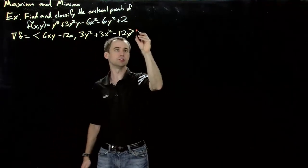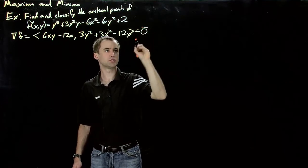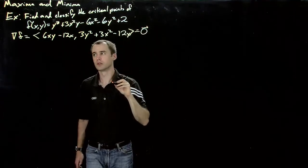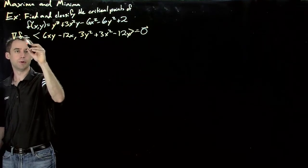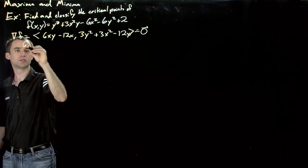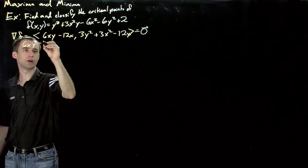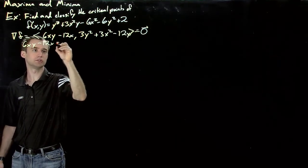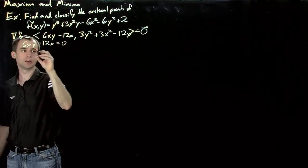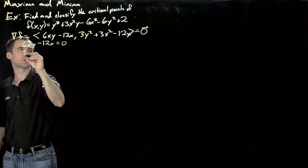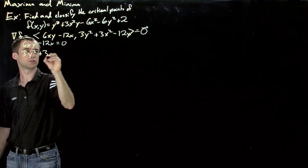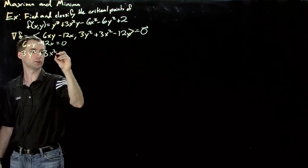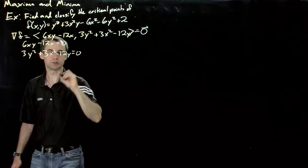And we want to find the points where this is equal to the 0 vector. In other words, we want to find the xy such that both 6xy minus 12x is equal to 0, and 3y squared plus 3x squared minus 12y equals 0.